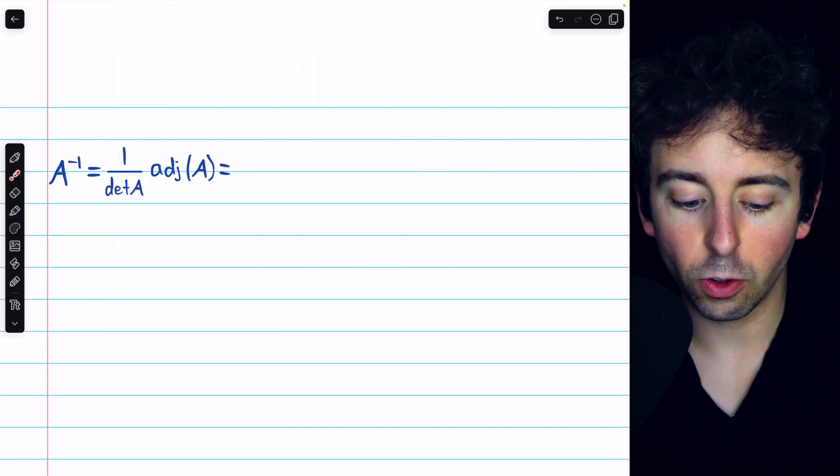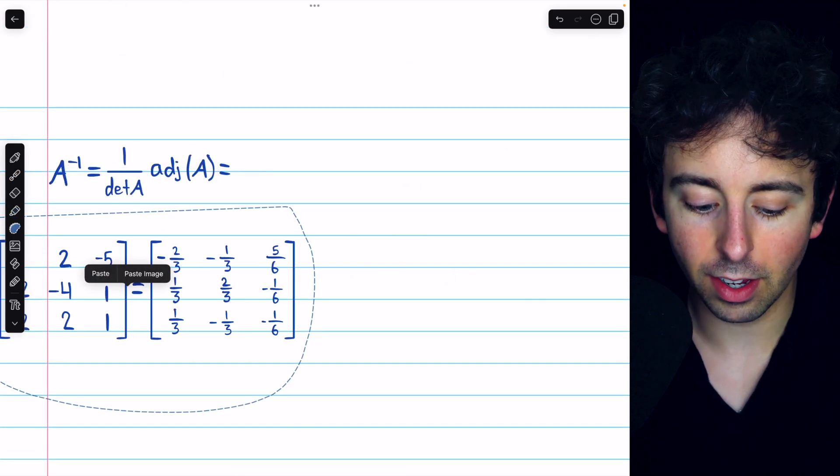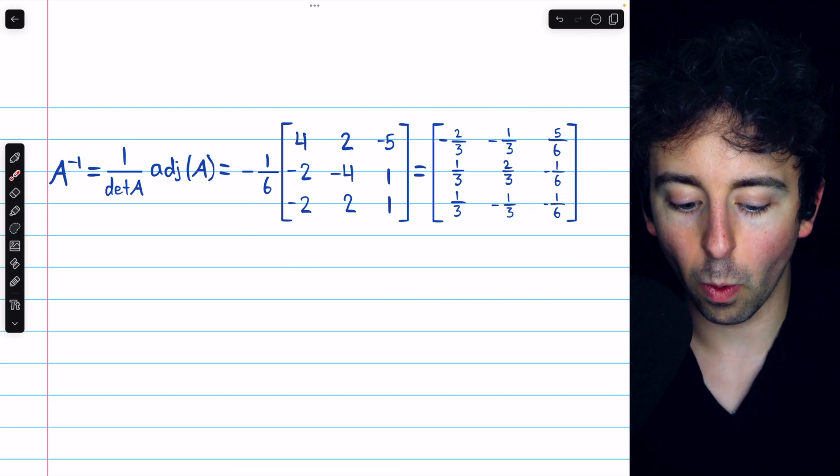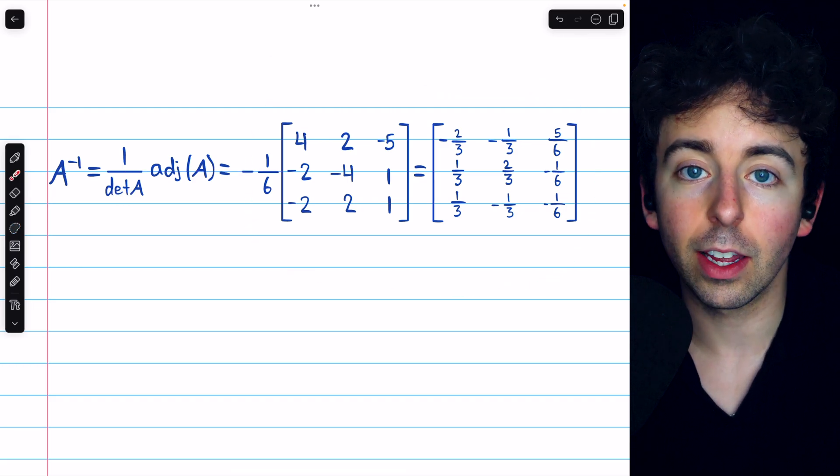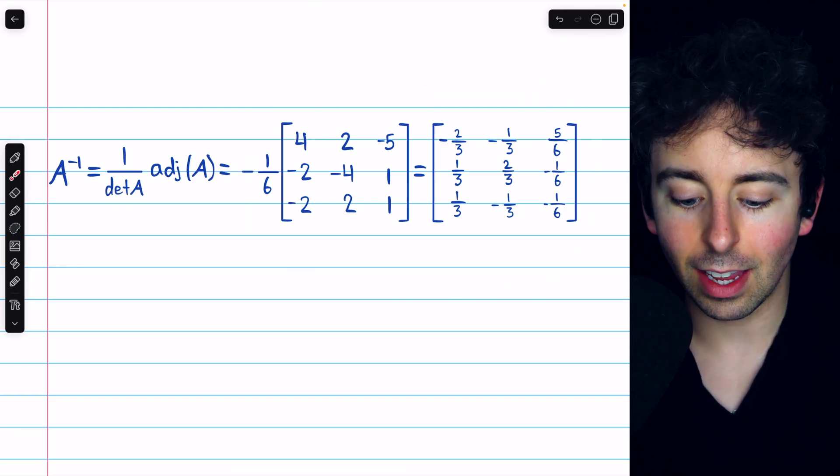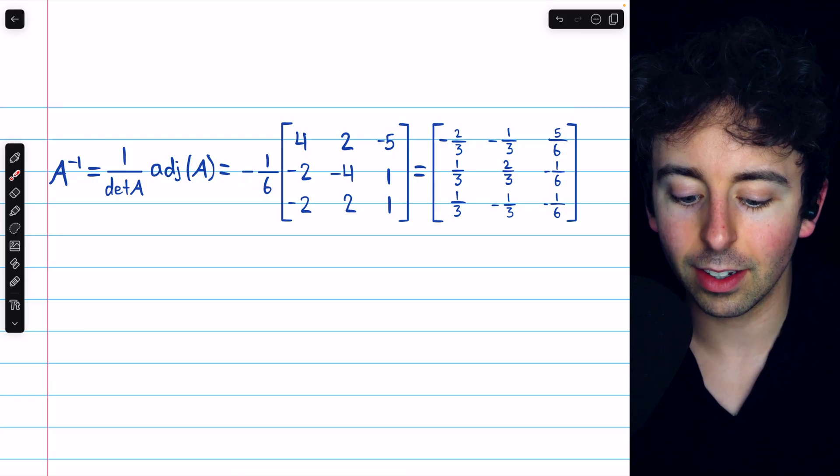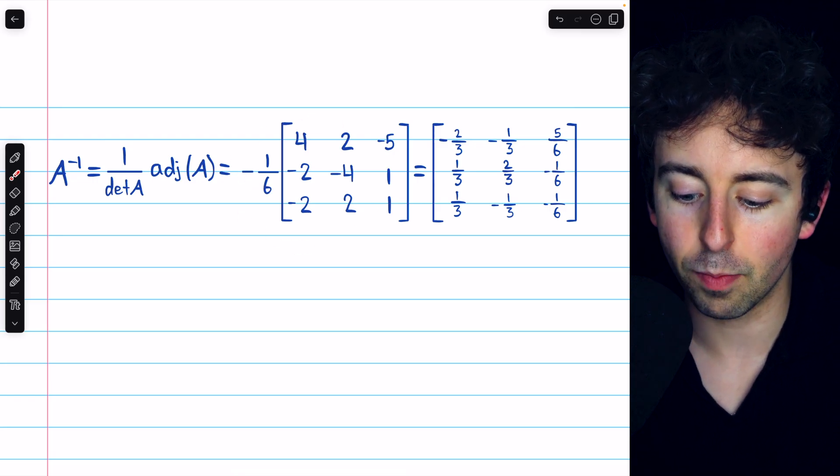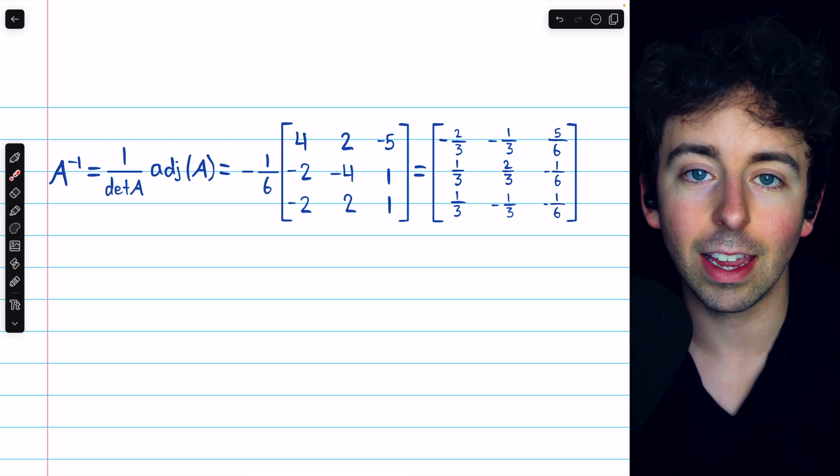And this is the computation to find the inverse of the matrix using the adjoint. It's straightforward to find the determinant using a cofactor expansion. In this case, the determinant is negative 6, and so the computation ends up producing this as the inverse matrix.